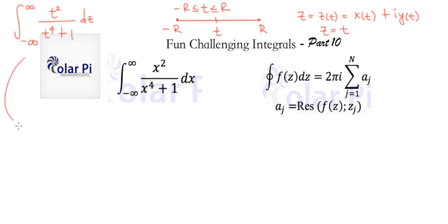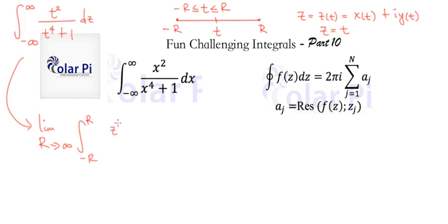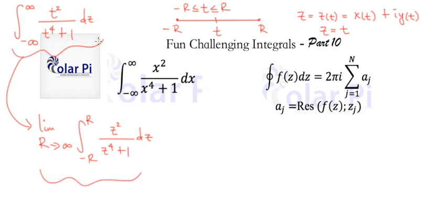With that, we can go from the integral written in red to the following: the limit as r goes to infinity of the integral from negative r to r of z² / (z⁴ + 1) dz. If you make the substitution z = t, you'll see this is the same as before, so the switch from x to t was justified all along.